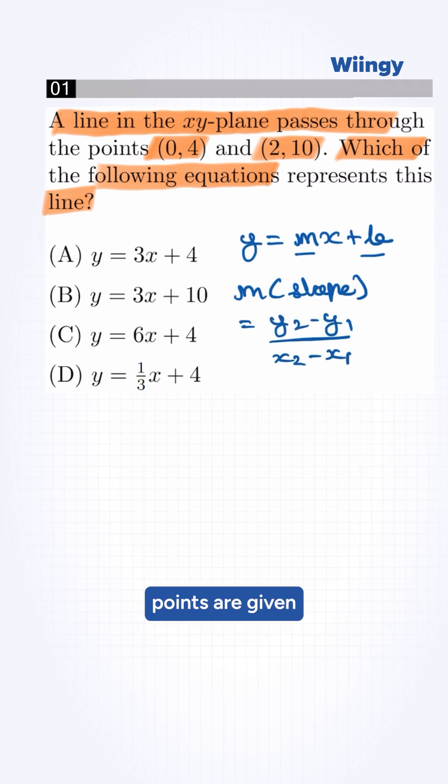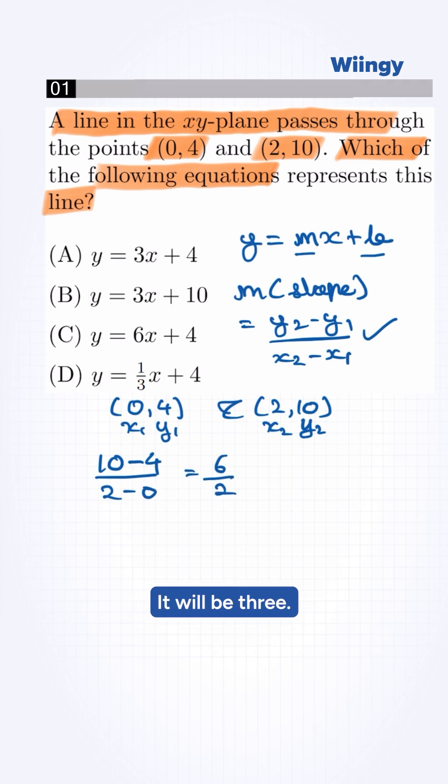Here two points are given, 0 comma 4 which is x1 and y1, and 2 comma 10 which is x2 and y2. We substitute these points to our formula. It will be 10 minus 4 by 2 minus 0 which is 6 by 2. It will be 3. So m is equal to 3.